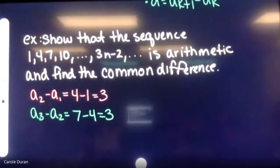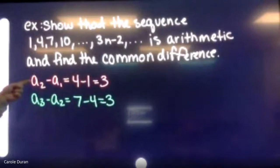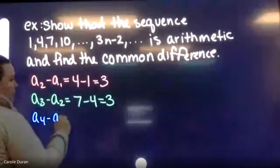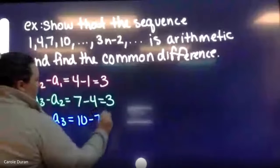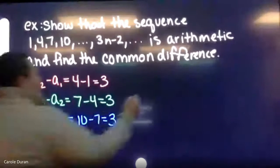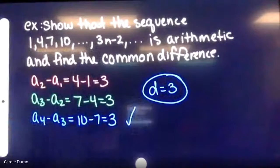We need a third set. Term four minus term three: ten minus seven gives a difference of three. All three differences are the same, so the common difference d equals three and the sequence is confirmed to be arithmetic.